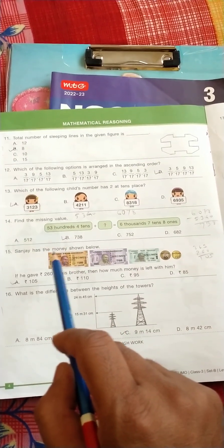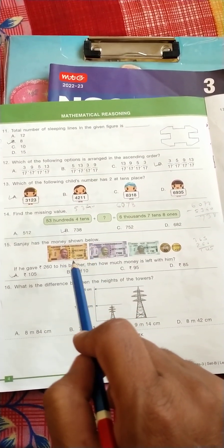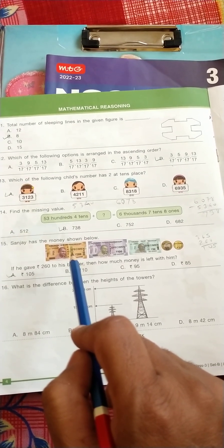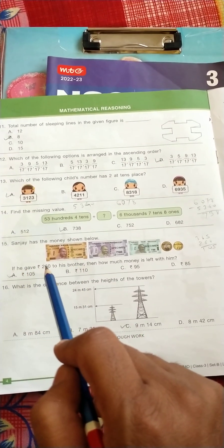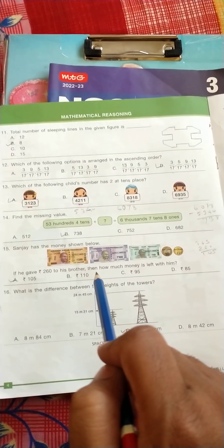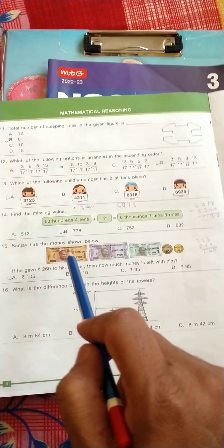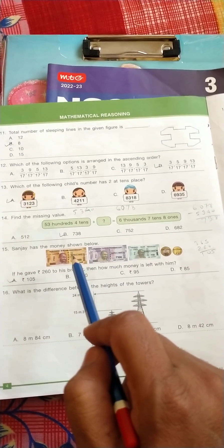Sanjay has the money shown below. If he gave 260 to his brother, then how much money is left with him? So just count this money, it's 200.